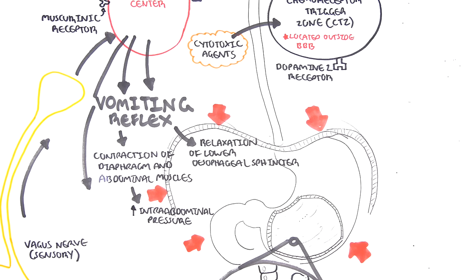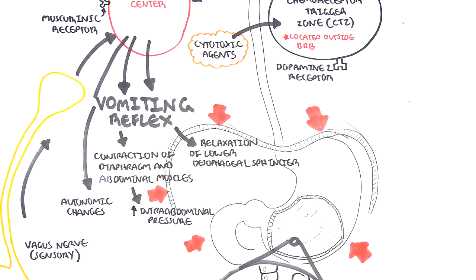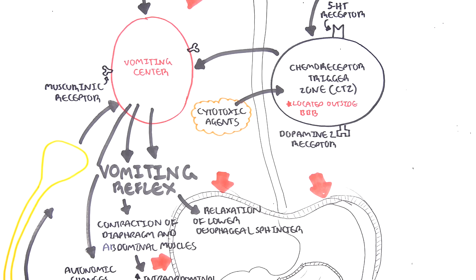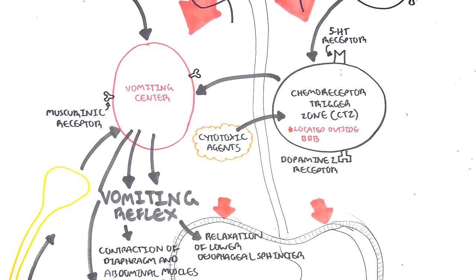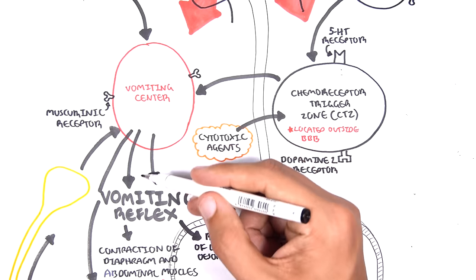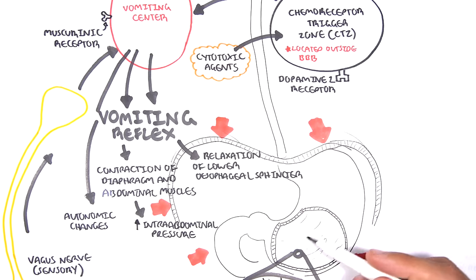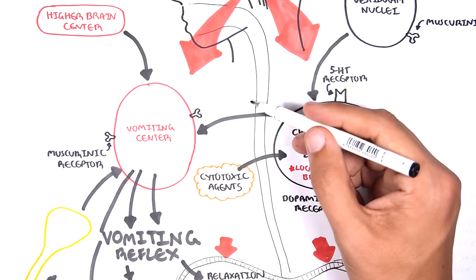There are also autonomic changes, such as tachycardia, which is increasing heart rate, and we also increase salivation, as well as peristalsis. The vomiting reflex also causes the epiglottis to close at the top part, because we don't want food to travel down to the lungs. Once the vomiting reflex does all these things, then the vomit or expulsion of food can happen.